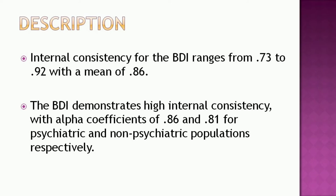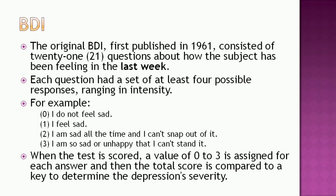The original BDI, first published in 1961, consisted of 21 questions about how the subject has been feeling in the last week. Each question had a set of at least four possible responses ranging in intensity, for example 0 to 3: at 0 — I don't feel sad; 1 — I feel sad; 2 — I am sad all the time and I can't snap out of it; 3 — I am so sad or unhappy that I can't stand it.